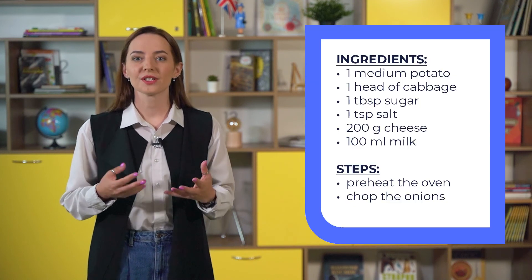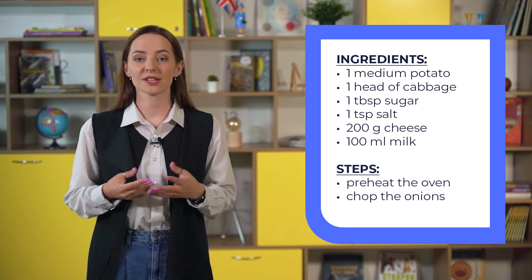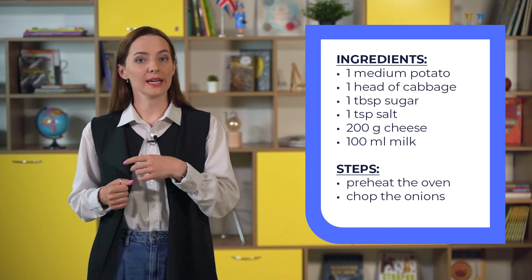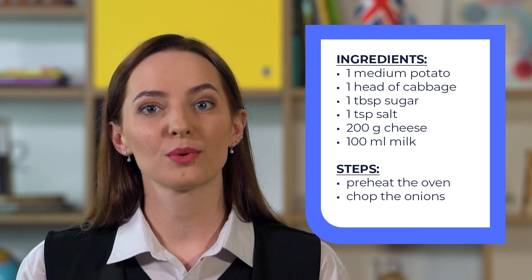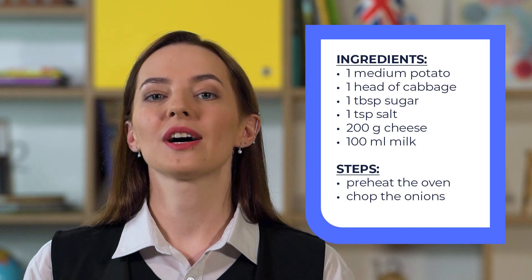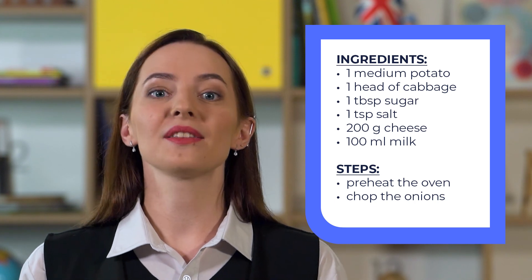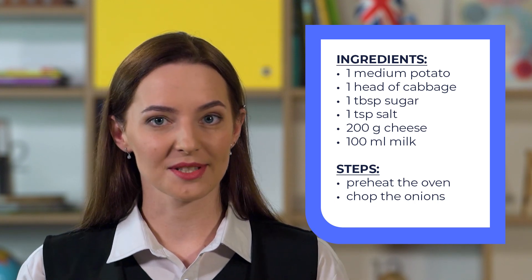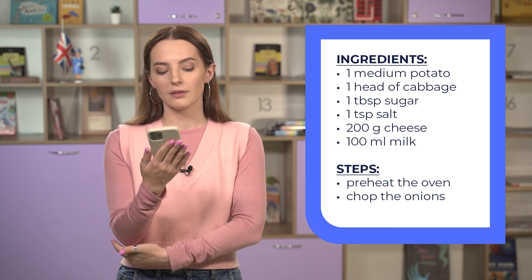Well done! Have you ever cooked or helped to cook borscht? Is it a difficult recipe? By the way, can you tell me the recipe? How should you organize it? First, state all the ingredients. When you mention them, say how much of each you need — for example, 1 medium potato, 1 head of cabbage. Also use cooking measurements, for example, 1 tablespoon or 1 teaspoon, 200 grams or 100 milliliters. Next, divide the cooking process into short and clear steps. Use imperative to make them easy to understand — for example, preheat the oven, chop the onions.